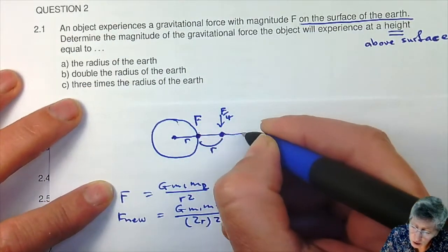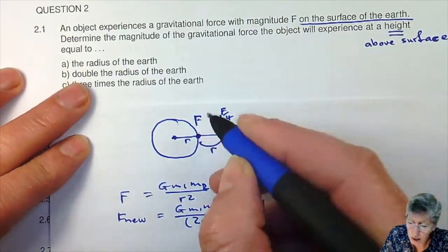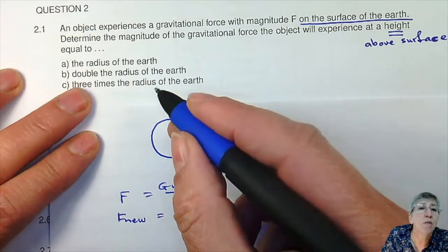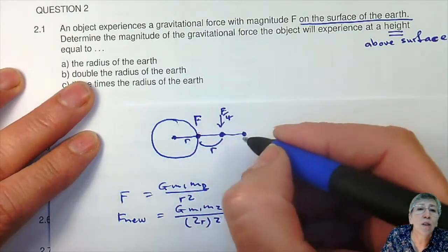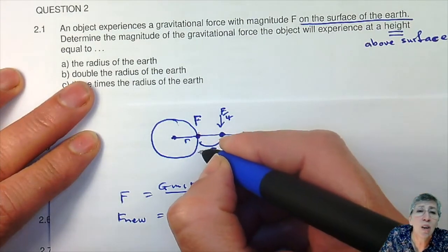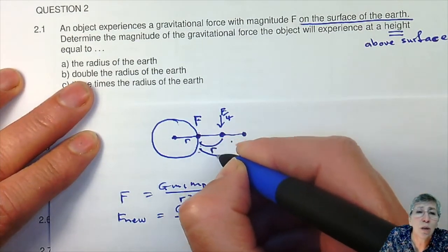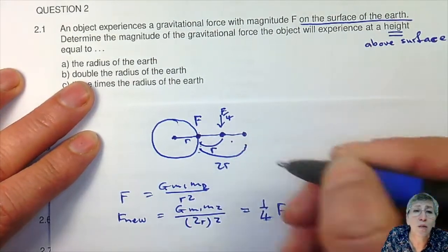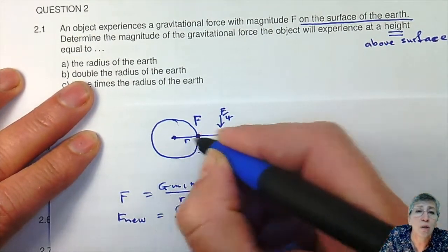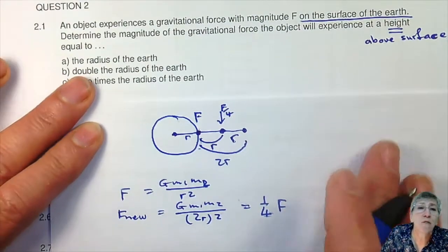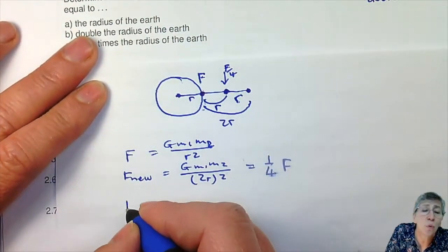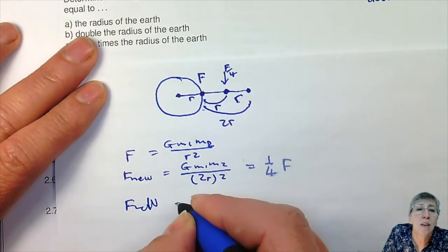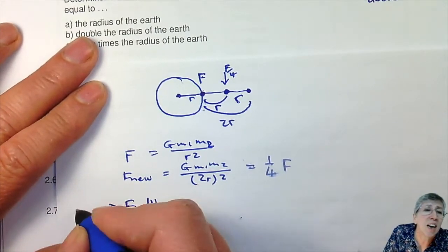Moving on. The next question asks about double the radius of the earth — so you are at a height of 2R from the surface of the earth. Now calculate the new force.